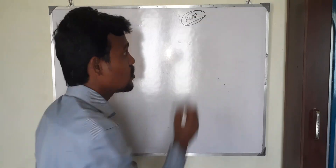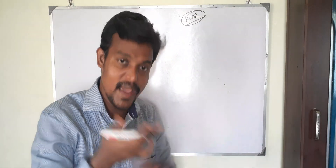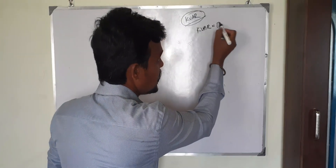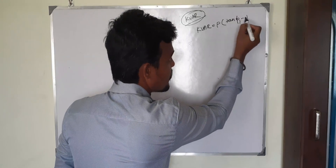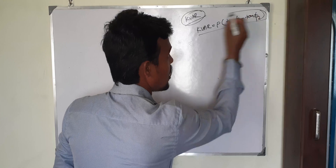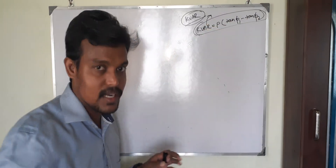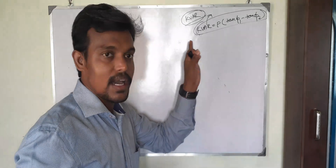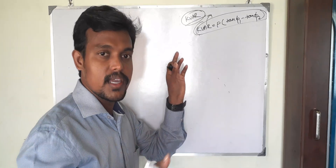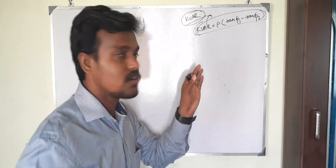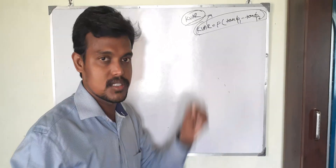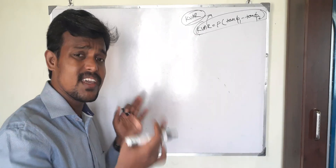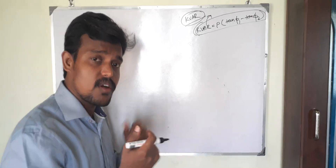Regarding APFC, how do we calculate the KVAR? I have already done a video on this. The formula is: KVAR = P × (tan φ1 − tan φ2). I explained how to calculate the KVAR based on your maximum load very clearly in my last video, which is available in three languages. The link is in the video description.